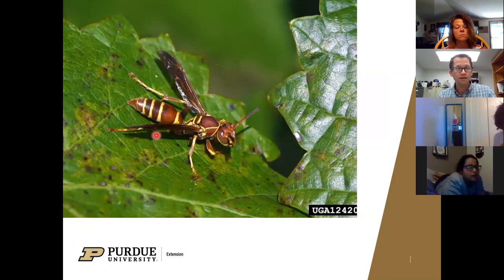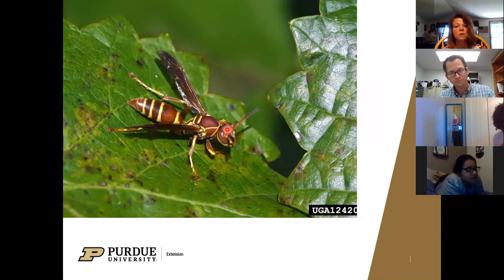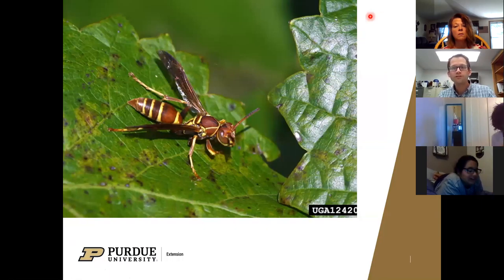Here's another example of a different type of insect - a wasp. Again we can see the different body parts.